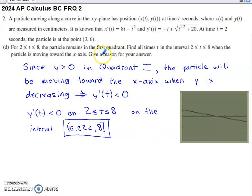So the reason why it's significant that the particle is remaining in the first quadrant is we know that y is positive in the first quadrant. If the particle is moving toward the x-axis, the y-coordinate is going to be decreasing.